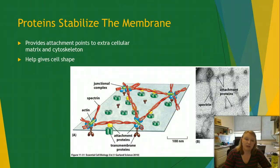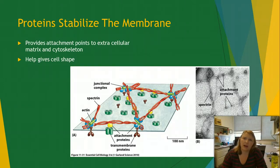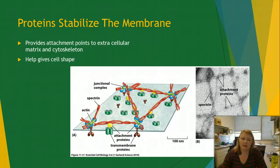Beyond allowing things to transport through, proteins also serve as anchors and help stabilize the membrane. Remember how the membrane is fluid and always moving — that could cause a problem if there's nothing holding things in place. The cytoskeleton helps hold the membrane in shape, and it anchors to the membrane via these proteins, which is what helps stabilize the cell.